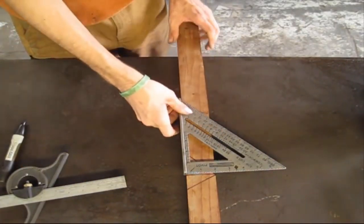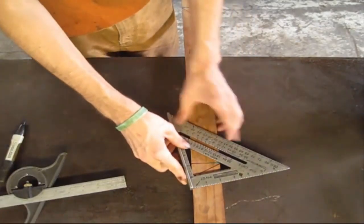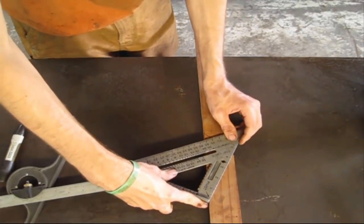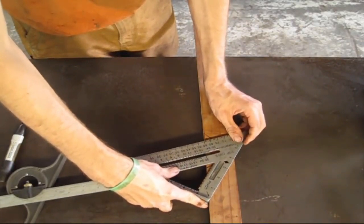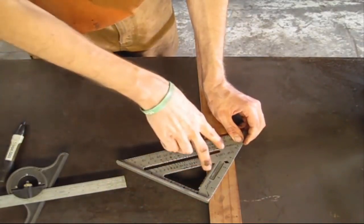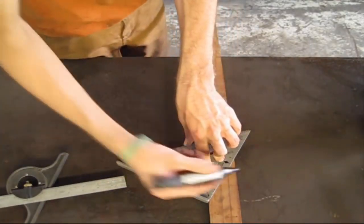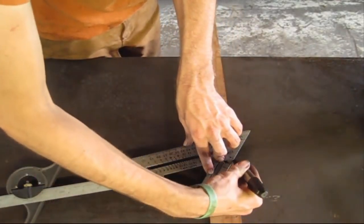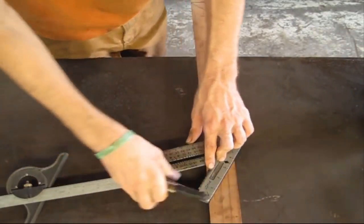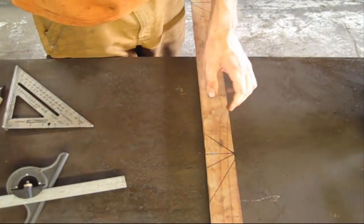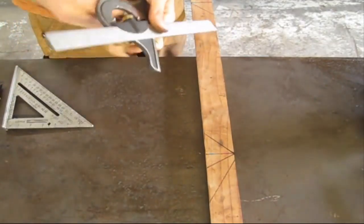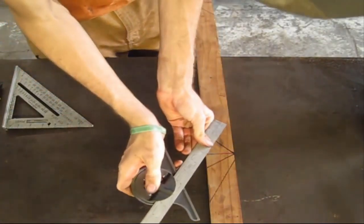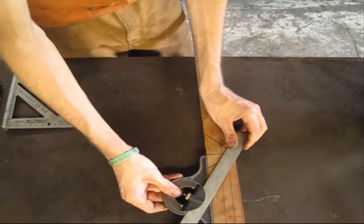To give you an example, if we take the speed square and we set it on 60 degrees, we'll come way up here. We'll use our pivot and set it on 60 degrees and then we'll scribe a line. If you take this combination square now and you read that line, it will not say 60 degrees. It will say 30.